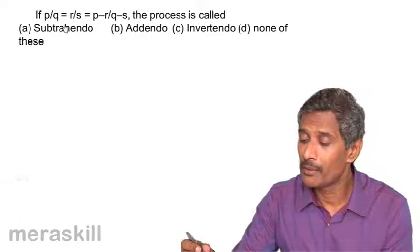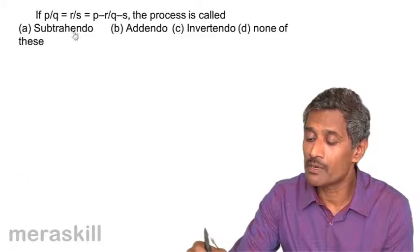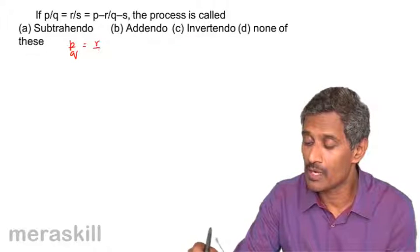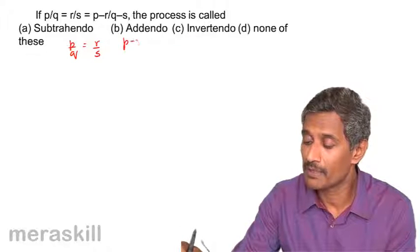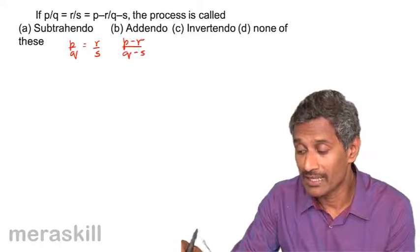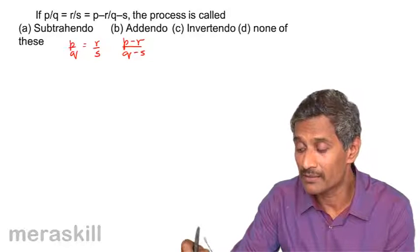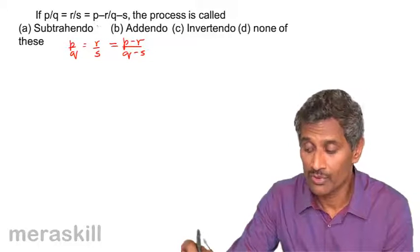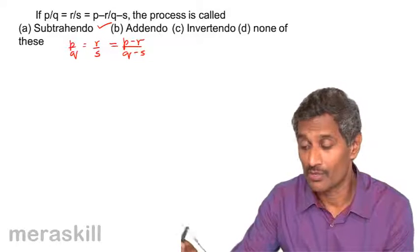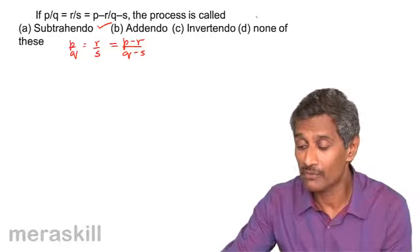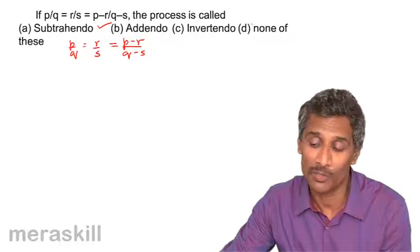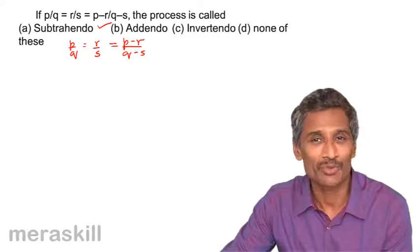We have here p by q is equal to r by s. p upon q is equal to r by s and you have p minus r upon q minus s. So you're subtracting the antecedents and you're subtracting the consequence and they are equal. So this is definitely subtrahendo rule. So it is subtrahendo. That is the option that we have over here. p by q is r by s and which is each of these is equal to p minus r upon q minus s and that is subtrahendo rule.